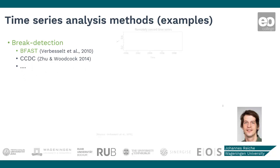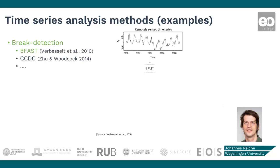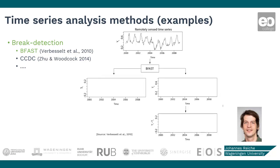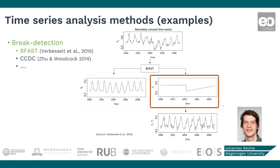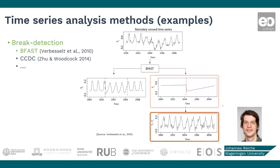These methods model the normal behavior of the time series and detect abnormal behavior as change. Here we illustrate BFAST, which decomposes the time series signal into several components: namely a seasonal component representing forest seasonality, a trend and break component representing trends like regrowth and breaks like deforestation, and a residual component.